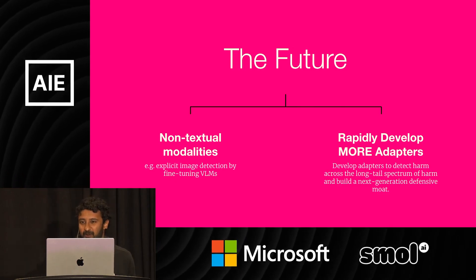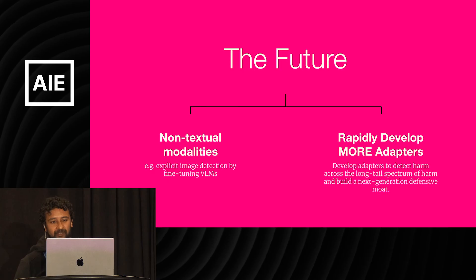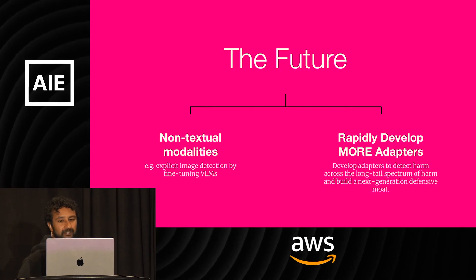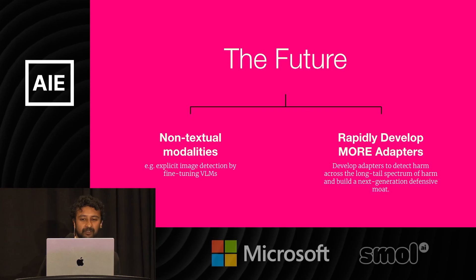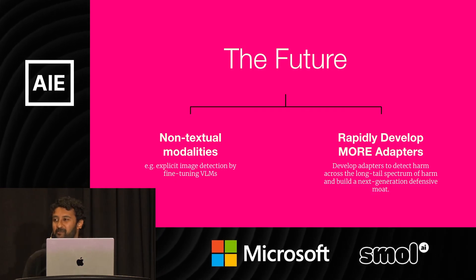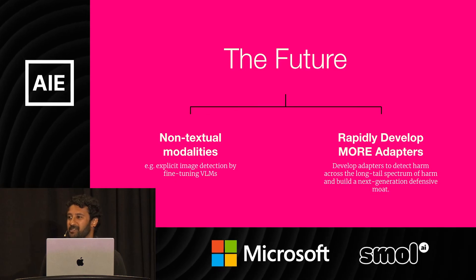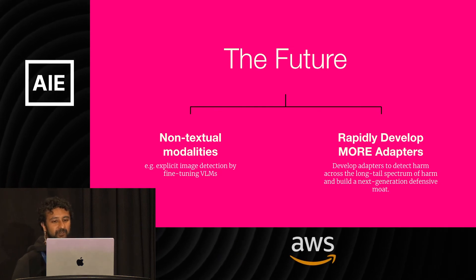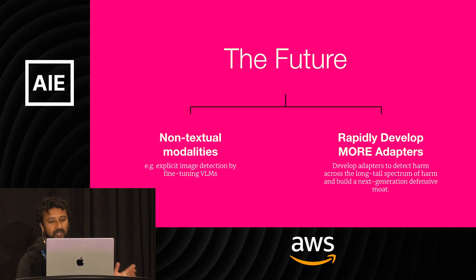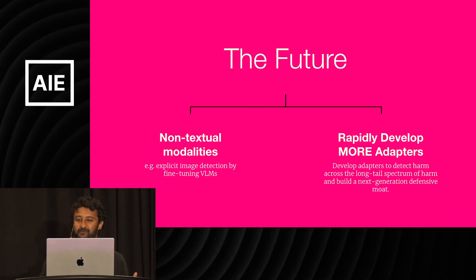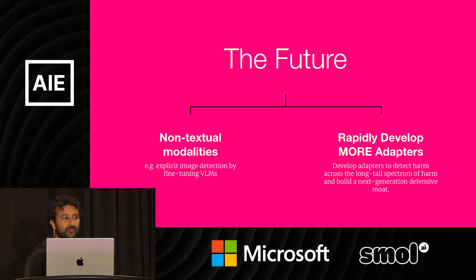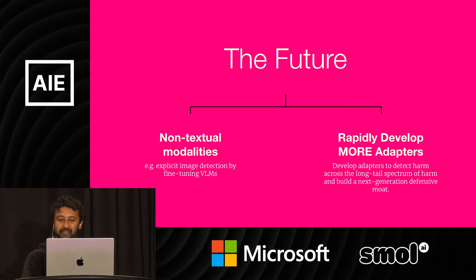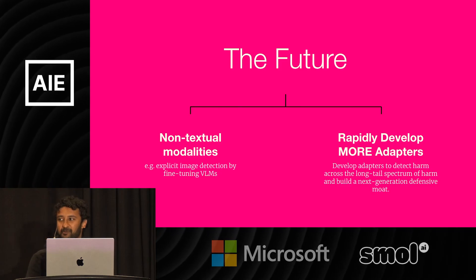So where do we go from here? We're interested in the growing work on non-textual modalities and how we can leverage that for detection purposes. For example, we can use pre-trained visual language models like LLaVA to do explicit image detection, and that's an active area of exploration for us. Overall, we're excited about rapidly training adapters for detecting harm along the long tail of TNS violations. We can create high-quality datasets with trust and safety operations and policy experts with AI in the loop, automate training and retraining pipelines for fine-tuning adapters, and take advantage of LoRaX to slot in new adapters for inference with low marginal cost. Ultimately, we can build a next-generation defensive moat against harm that takes advantage of the Gen AI landscape today, leading to a safer, healthier platform. Thanks for listening.